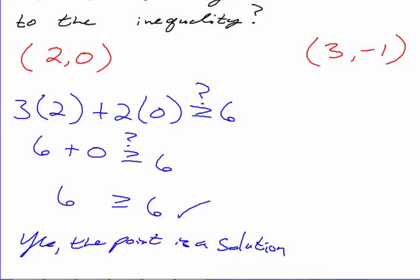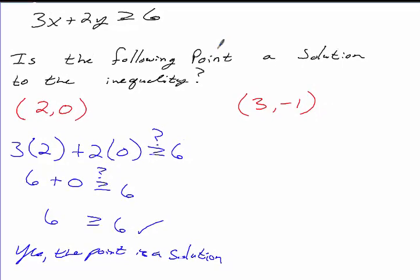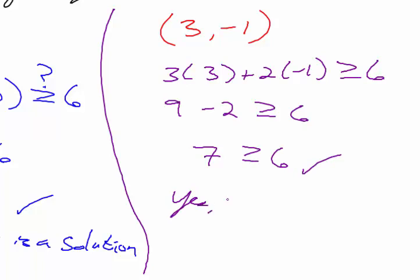If a point is a solution, that means it's inside the shaded region when we actually graph these. Those of you that remember how to graph linear inequalities, we either shade above or below. So what's 3 times 3? That's 9. And 2 times negative 1 is negative 2. So 9 minus 2 is 7. Is 7 greater than or equal to 6? Yes — check, this works. The point is a solution.